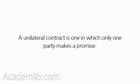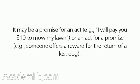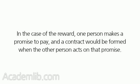Void, and valid. A unilateral contract is one in which only one party makes a promise. It may be a promise for an act — for example, I will pay you $10 to mow my lawn — or an act for a promise, for example, someone offers a reward for the return of a lost dog. In the case of the reward, one person makes a promise to pay, and a contract would be formed when the other person acts on that promise.